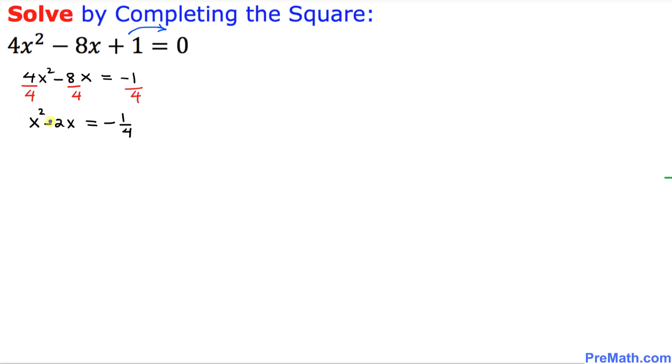Our next step is look at this, the coefficient of x only which is negative 2. I am going to just write down over here. Always divide that number by 2. That is going to give us negative 1 and then we are going to square it. Always we square it so we are going to get positive 1. And also we know that this 1 could be written as 1 square. So 1 square.